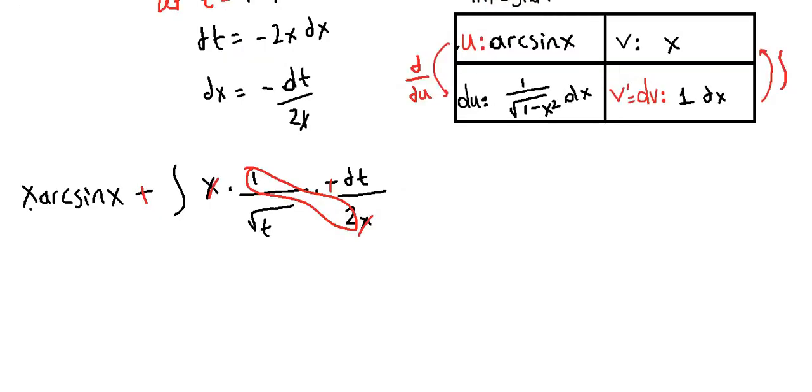So if we clean up our integral, we have x arcsin(x) plus 1 half integral of 1 over square root of t dt.